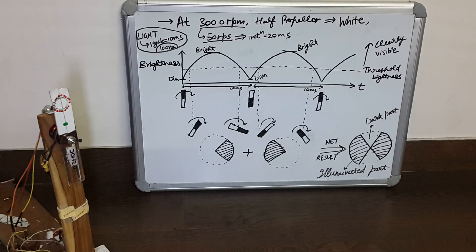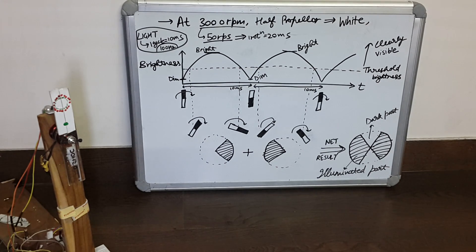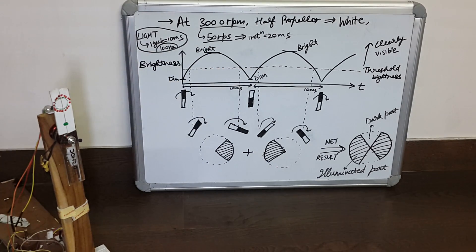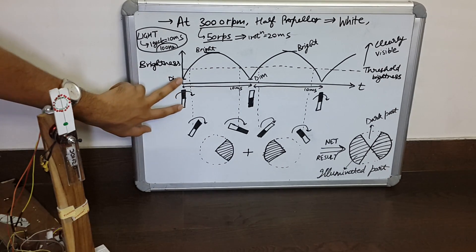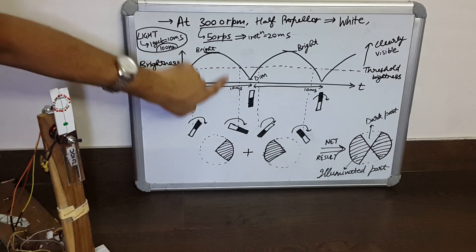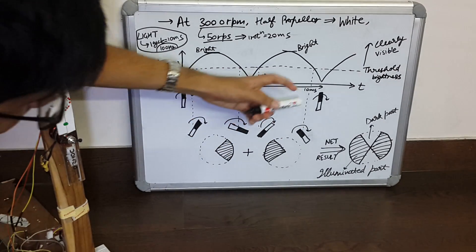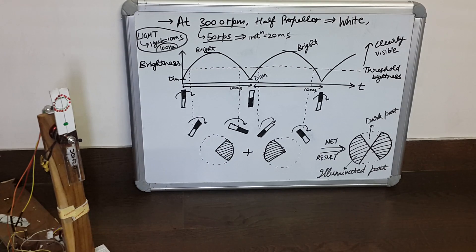If the propeller is rotating at 3000 RPM, one rotation of the propeller equals 20 ms, but the light has one cycle of 10 ms because it is blinking at a frequency of 100 Hz. So in the time that the propeller makes one rotation, we have two cycles of light.